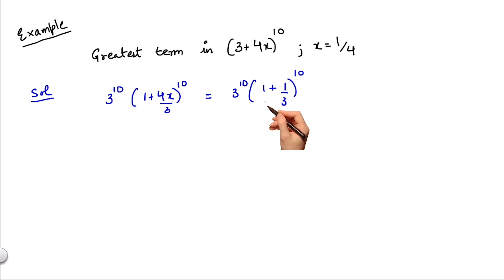Now we can find out m. m is nothing but |x|(n+1)/(x+1) which equals (1/3) × (10+1) which is 11 divided by (1/3 + 1) which equals when solved 11/4 which would be 2.75.